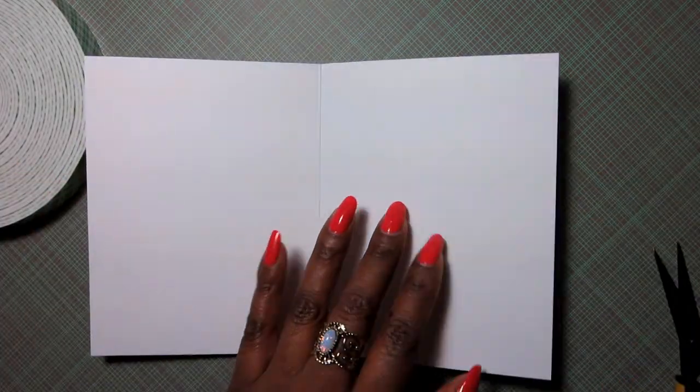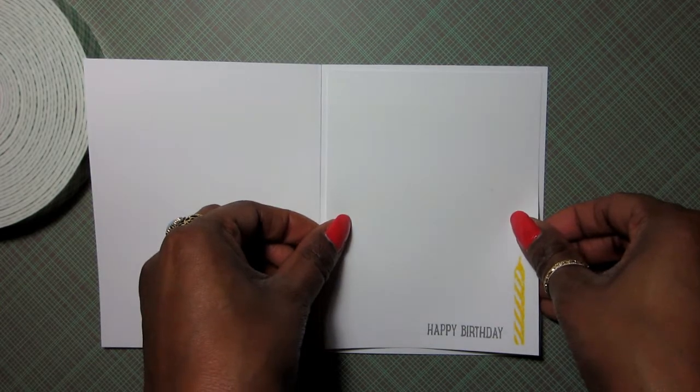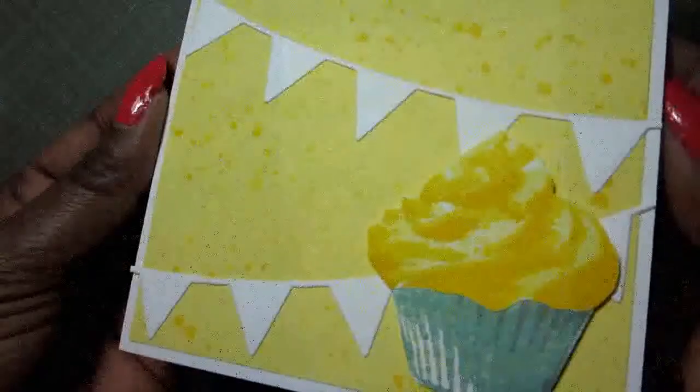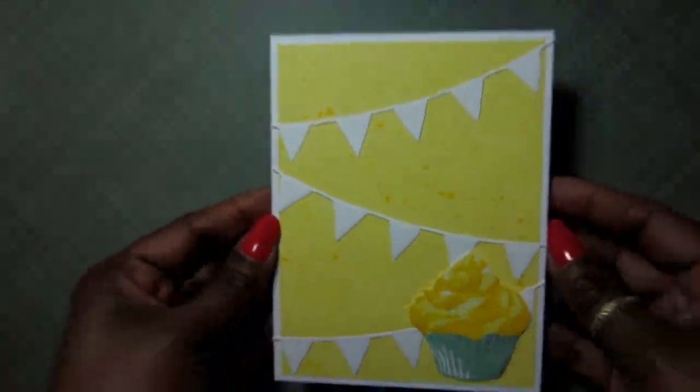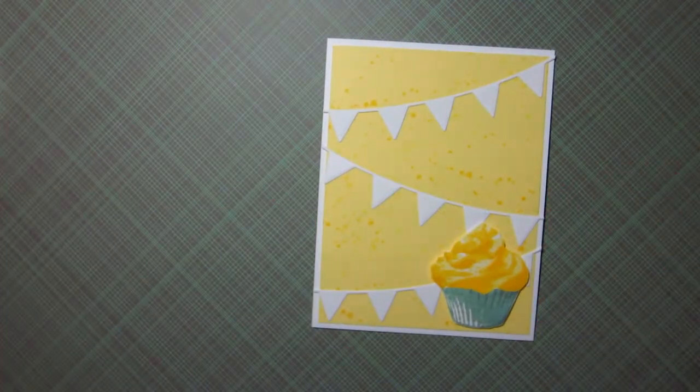We've got to do the inside really quick. We have our little panel that we already stamped. I'm just going to use my ATG gun to run some tape on the top and the bottom. When you have that, just go ahead and line this up on the inside. Just get it nice and even. There we have our finished card. I think this is really cute. It's so bright and cheerful. Here's a little up close look at it. I think this card could be given to a man or a woman or to a kid. It's just really happy and what a fun way to say happy birthday.